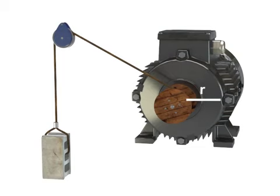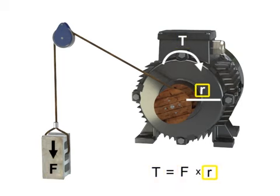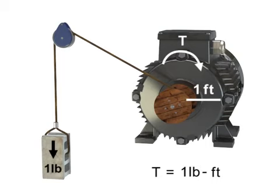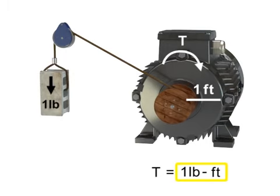Work is defined as a force applied over a distance. In the case of flywheels, winches, and motors, the work is called torque. Torque is a special type of work that produces rotation. Torque occurs when a force acts on a radius. Typical units of measurement for torque are pound-foot. The torque illustrated here is equal to one pound-foot.